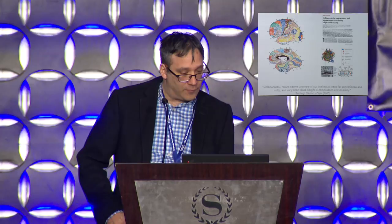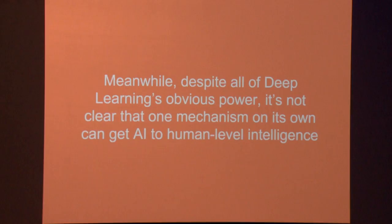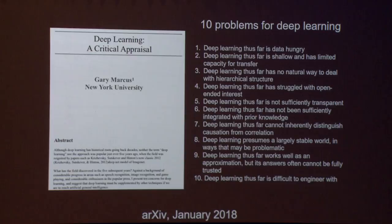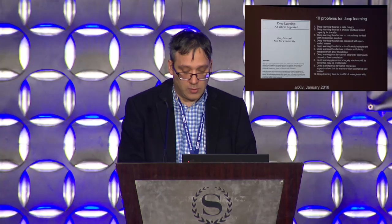I love this quote from Cajal: 'Unfortunately, nature seems unaware of our intellectual need for convenience and unity, and very often takes delight in complication and diversity.' Why are we looking for one thing? Meanwhile, despite all of deep learning's obvious power, it's not clear that one mechanism on its own can actually get AI to human level intelligence. It's great for speech recognition, but I wrote an arXiv paper with ten problems for deep learning — it's very data hungry, shallow, and has limited capacity to transfer.